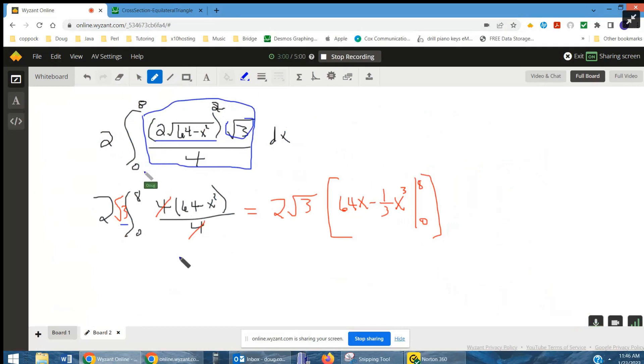After that, the 4s cancel out. So we're taking the antiderivative of 64 minus x squared, which is 64x minus 1 third x cubed, evaluated from 0 to 8.